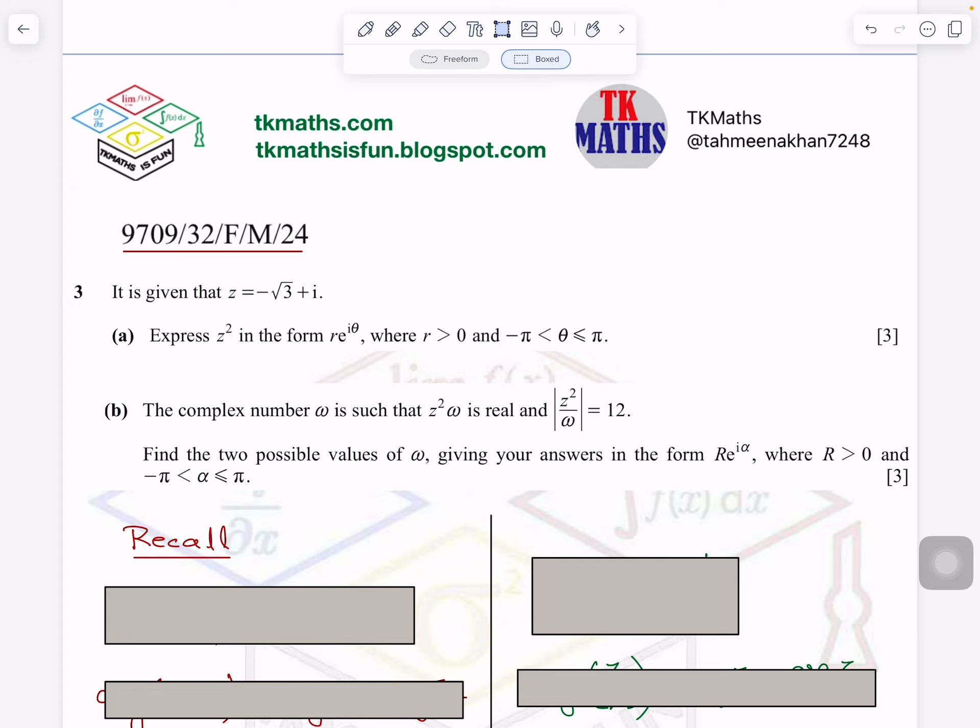The complex number is given to you: minus root 3 plus iota. You can see it here. There are two parts of the question. Number one is that you have to express Z square in the form R e^(iθ), which is the exponential form of the complex number.